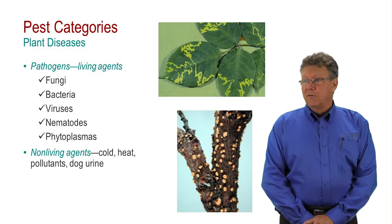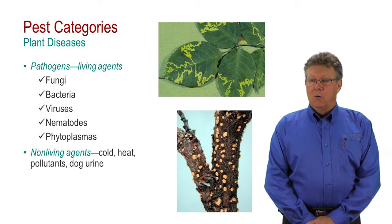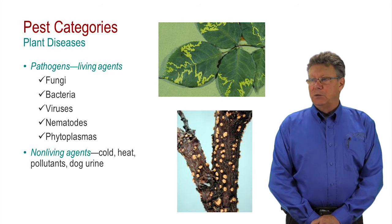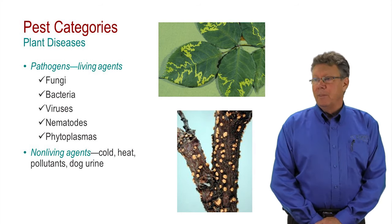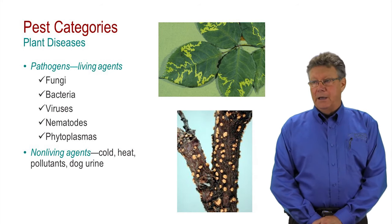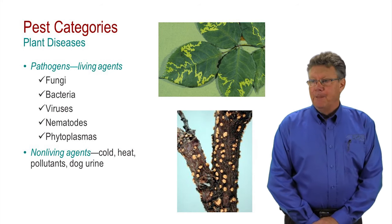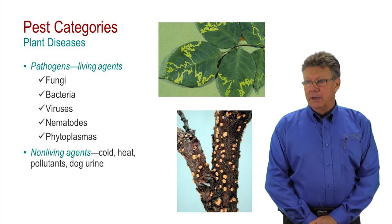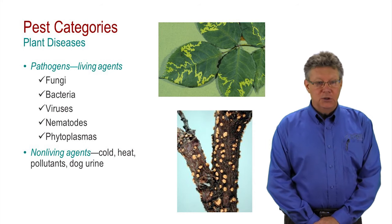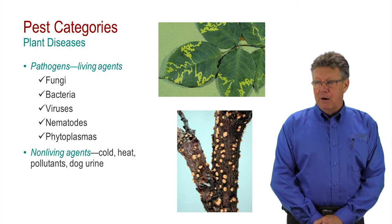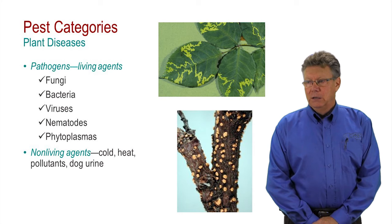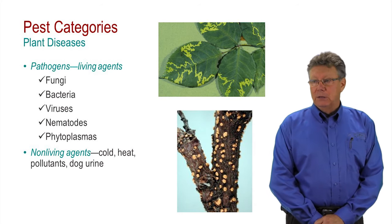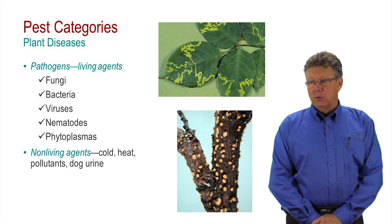Plant diseases are the fourth major category of pests. A plant disease can be caused by disease organisms called pathogens, or they can be caused by non-living agents. Disease pathogens, or living agents, include fungi, bacteria, viruses, nematodes, and phytoplasmas. These organisms infect plants and often depend on specific host species to survive.